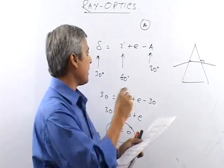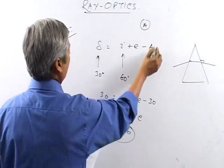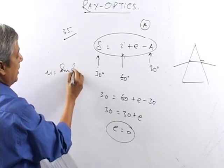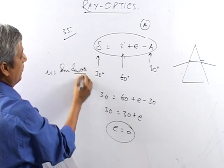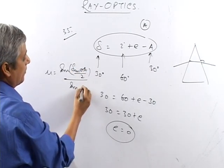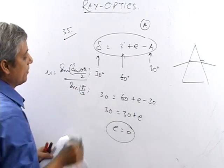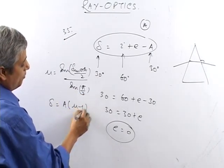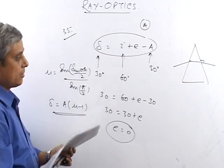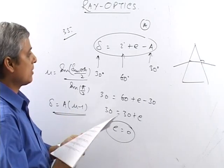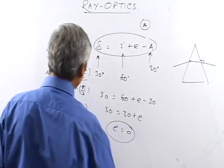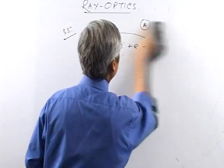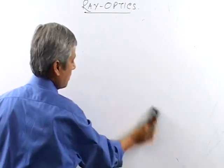For solving prism problems, two important relations are: μ = sin[(δ_M + A)/2] / sin(A/2), and δ = A(μ − 1) for small angles. These will help solve prism-related problems.